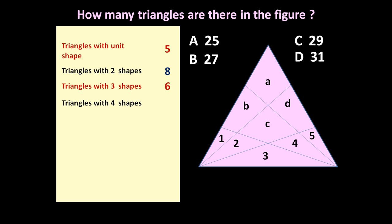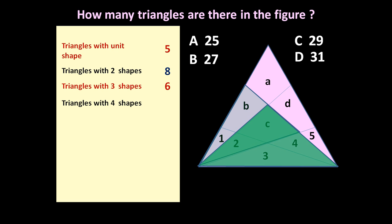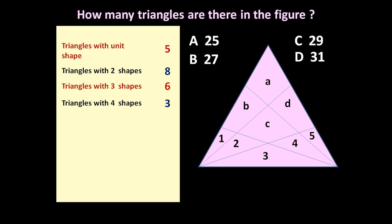Now let us count triangles with four shapes. How many such triangles can be formed? One, two, three. Friends, total three such triangles can be formed using four unit shapes.